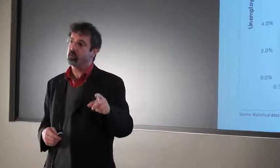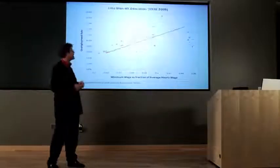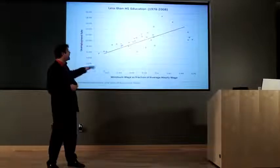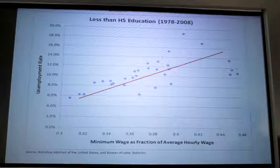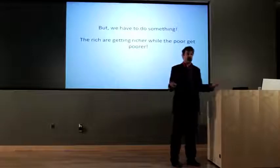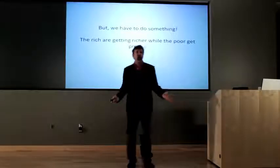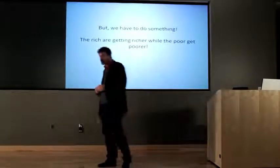The situation is worse when you look at workers who do not have high school educations. Here the relationship is even stronger. As the minimum wage rises, the unemployment rate amongst those without high school diplomas rises much faster. But we have to do something — the rich are getting richer, the poor are getting poorer, and minimum wage is one of the ways we address this.